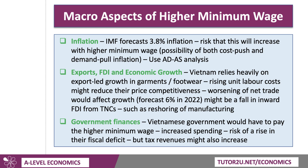There's also a fiscal dimension. The Vietnamese government would have to pay the higher minimum wage for public sector employees, which could risk an increase in the fiscal deficit. On the other hand, if more people are working in the formal economy and earning higher per capita incomes, that might broaden the tax base from both direct and indirect tax revenues.